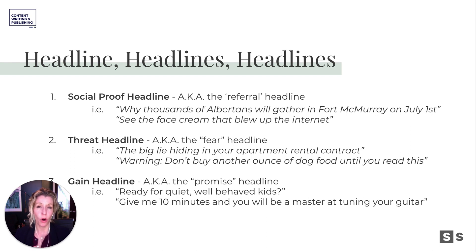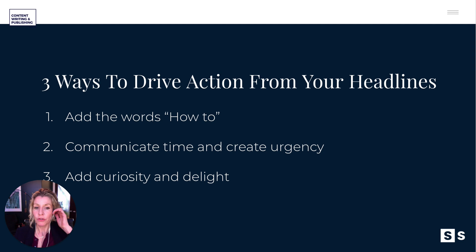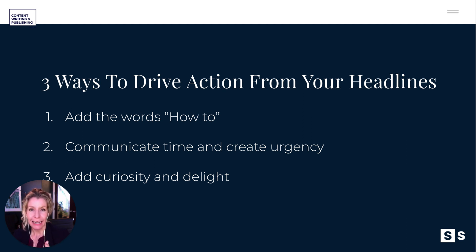Email subject lines are huge — the open rates are absolutely attributed to what you say in that subject line. I just see your company name and your subject line and sometimes a little preview text — if that's not compelling, I am absolutely not clicking. We really want the same to happen on our social posts. So how do we drive action? Opens, clicks, further reads or engagement? Maybe adding the words 'how-to,' even if that seems a bit obvious. Communicate time and create urgency — if something's going to run out or if it's now, that's really important. Add curiosity and delight — what's going to make someone feel so intrigued that they open that email or read that blog post?